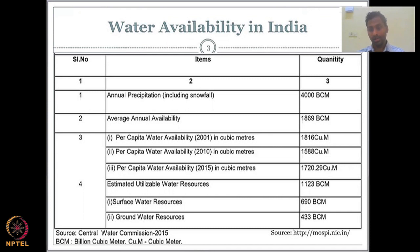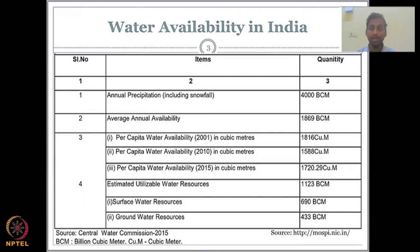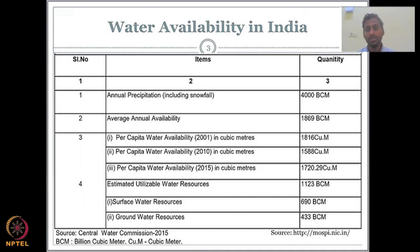Let us look at water availability in India. The annual precipitation is approximately 4000 BCM — billion cubic meters. Cubic meters is volume in three dimensions, and BCM stands for billion cubic meters, while MCM stands for million cubic meters. At an annual average for India, we have around 4000 billion cubic meters from precipitation, including snowfall.